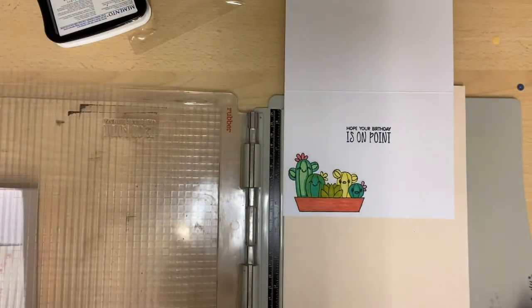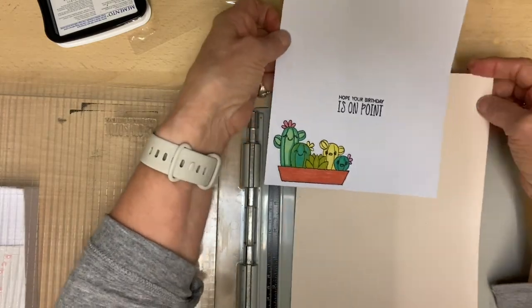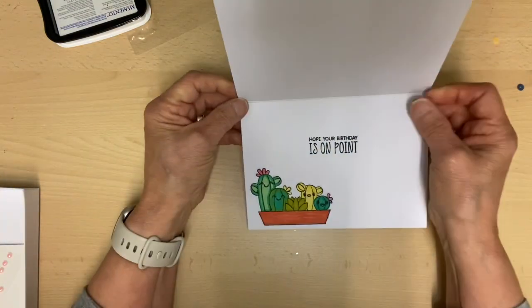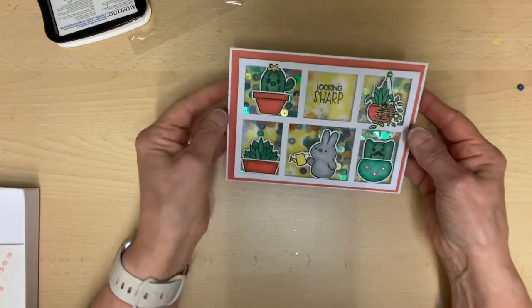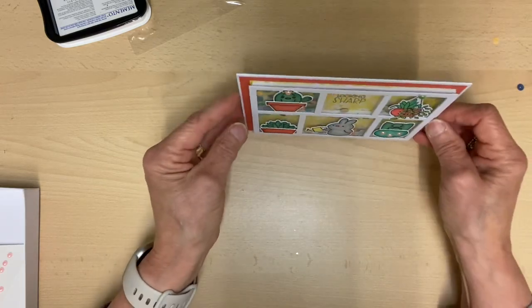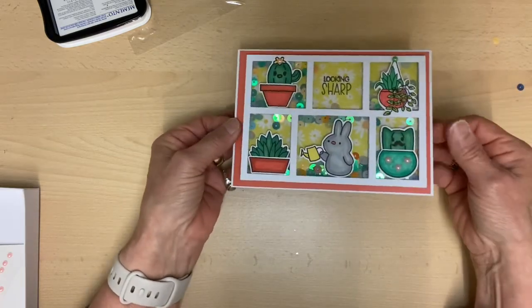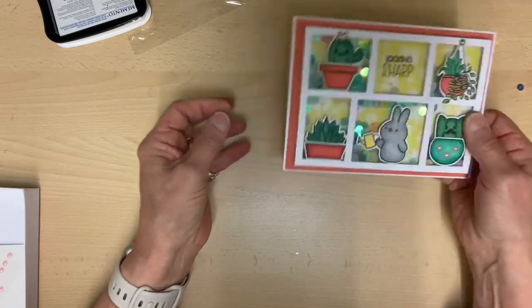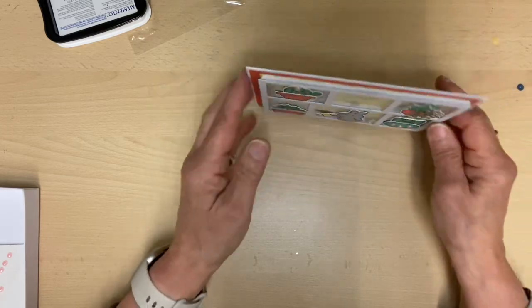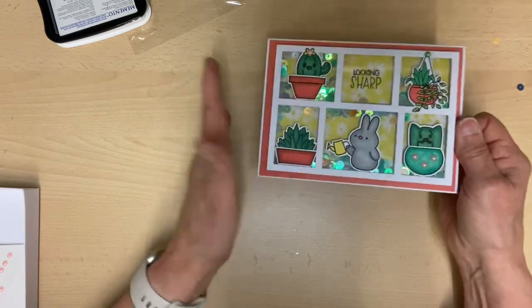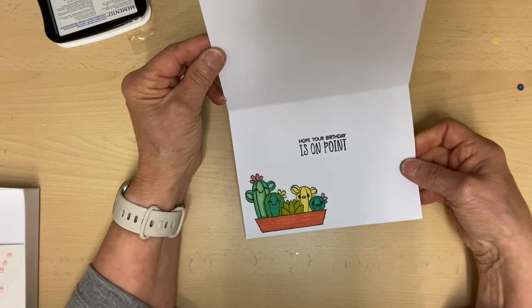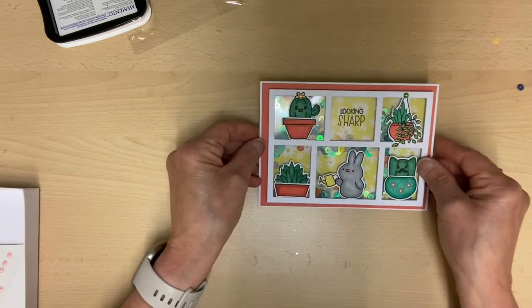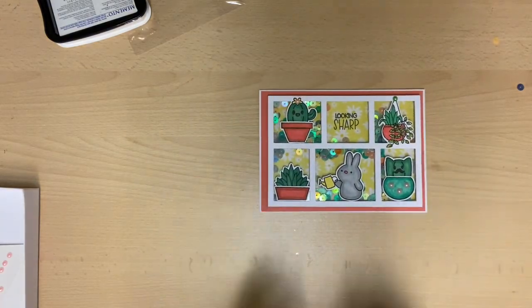So there we have it. Let me just move this out the way and we can have a look at the card. So there we are, there is card number two using the Time for Tea Paper Craft Society Box 58. And as I said in my previous post, this gives it a shaker feel to it. So there we are, and that's inside. So I quite like that.